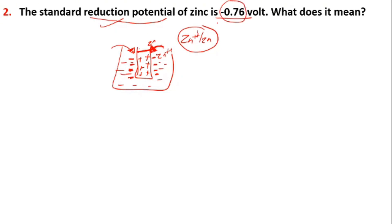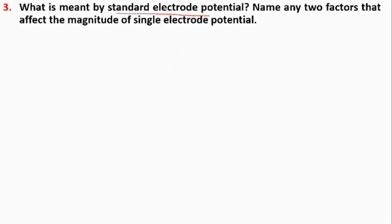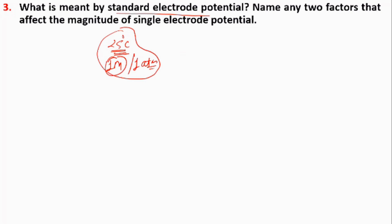This potential difference is developed between metal zinc and zinc ions when zinc ions are reduced to zinc. So we have to look at the standard electrode potential. The electrode potential is measured at 25 degrees centigrade, with the concentration of ions at 1 molar concentration or gas at 1 atm pressure. So we have the standard electrode potential. The symbol E⁰ represents the standard reduction potential of zinc²⁺ to zinc.